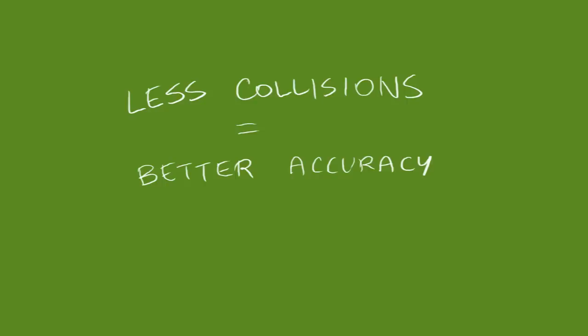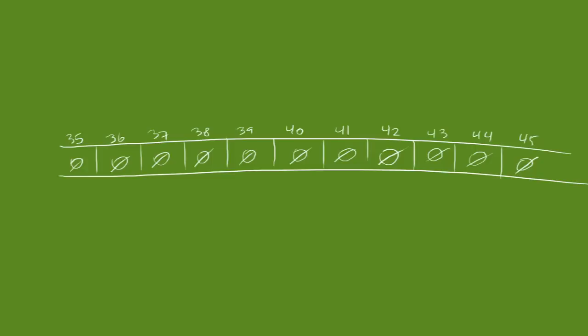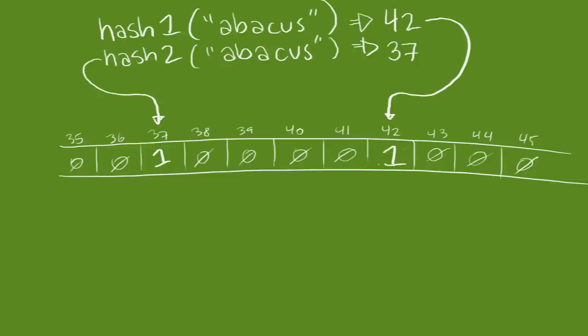So let's try to reduce the chance of a collision. Here's one way. Let's imagine that instead of running the word through just one hash function, we run it through a few different hash functions, and then set the bits at all of those different hash locations.